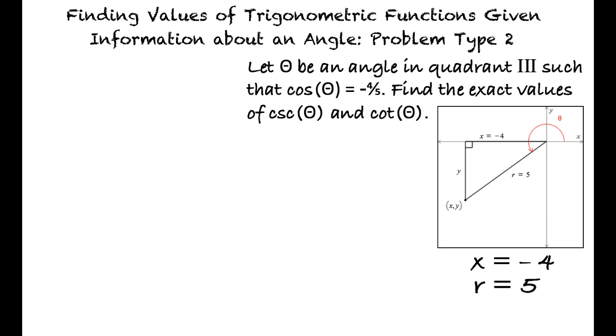Substituting these values into the Pythagorean theorem yields negative 4 squared plus y squared equals 5 squared. Solving for y yields plus or minus the square root of 9, and since quadrant 3 has negative values for x and y, we can simplify the square root of 9 to negative 3, right?